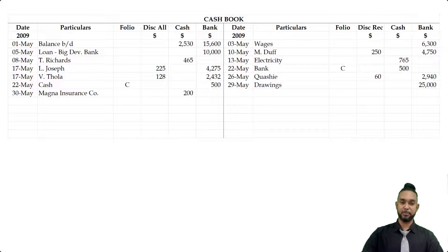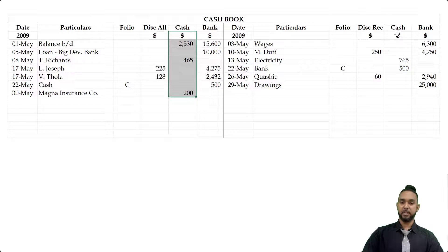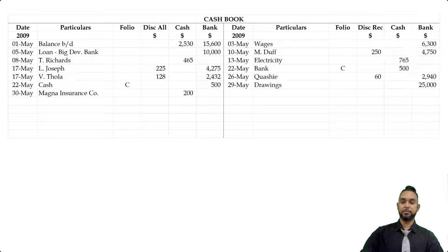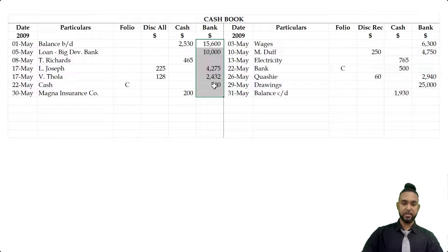Those are all the transactions, so we now have to balance off the cash book. The discount columns are not balanced off against each other — they are simply totaled and their totals are transferred to their respective accounts in the general ledger. The cash columns are balanced off against each other. On the debit side, adding up the items gives $3,195; on the credit side, $1,265. The difference of $1,930 is placed on the side with the lower amount. For the bank column, debits total $32,807, but credits total $38,990 — more money went out than came in.